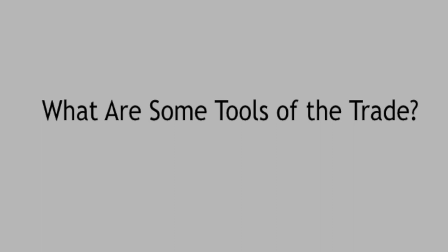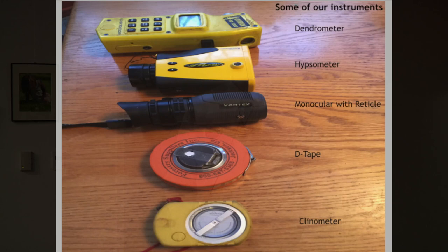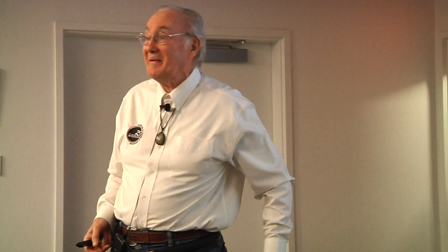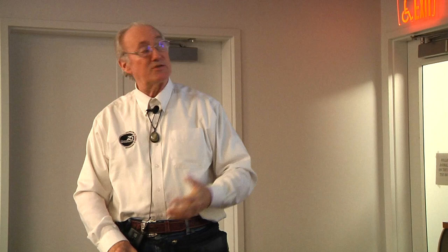My wife is a retired professor of music from Smith College who collects pianos, so she allows me to collect instruments. This is an RD1000 from LaserTech out in Colorado — my first birthday present from her at about $1,500. It's a laser measuring device; one of the things it does is measure tree height, making it a hypsometer. It's accurate to about three to four inches, so you're measuring something way up there and you can get that close.